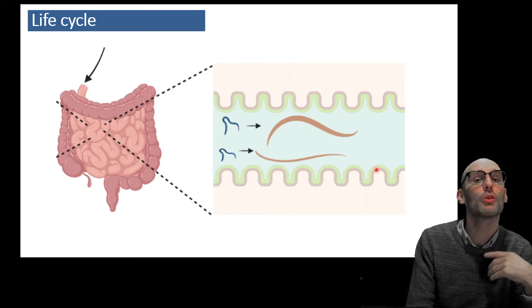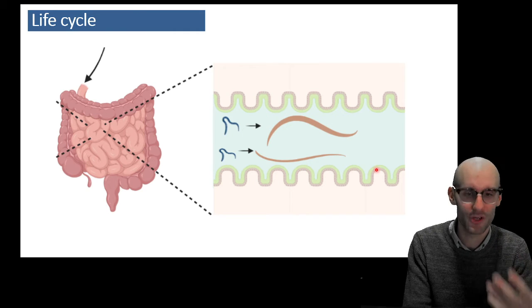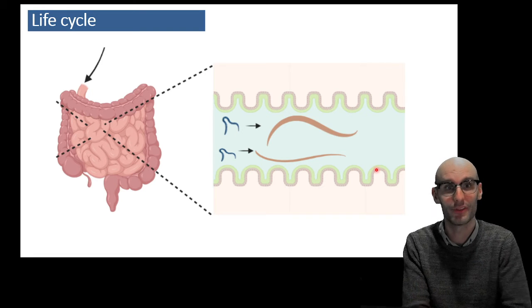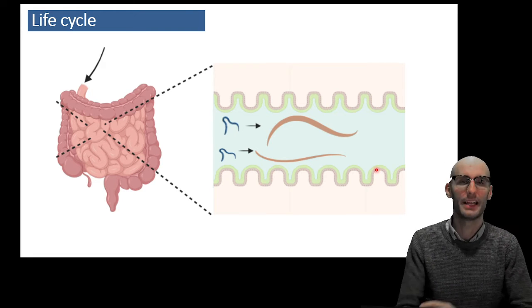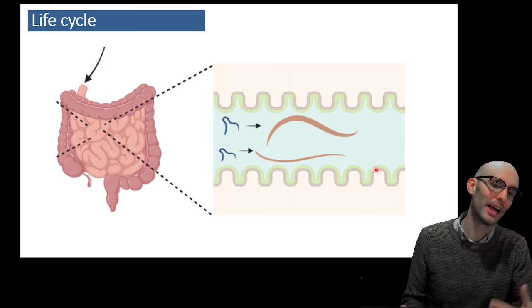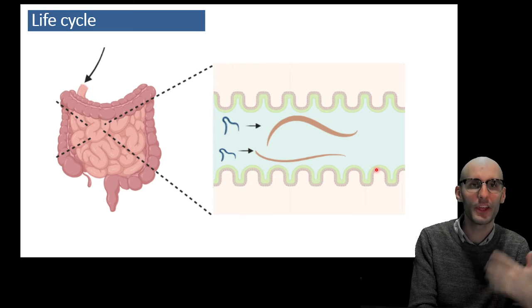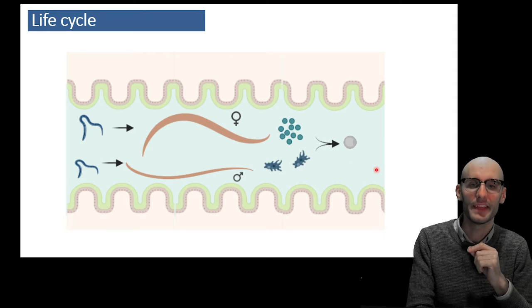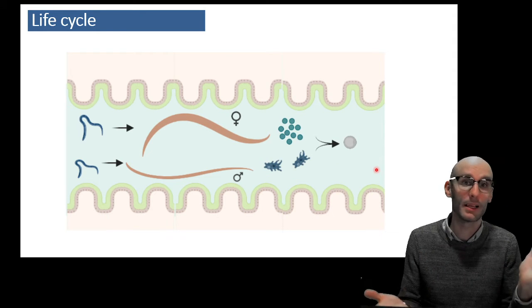Once it's done that little route, it will develop into the adult worms. Now the adult worms can be quite big and quite long-lived, sometimes years in your intestine, and they can get up to around 15 centimeters, sometimes bigger. They're not quite as big as those giant tapeworms that can occur.